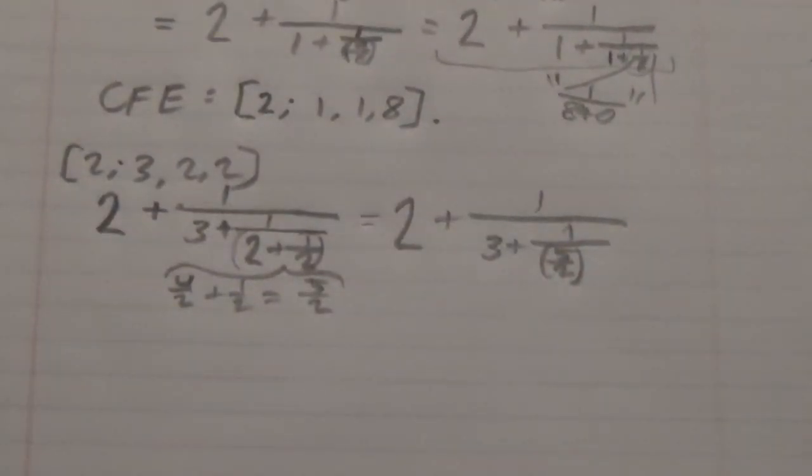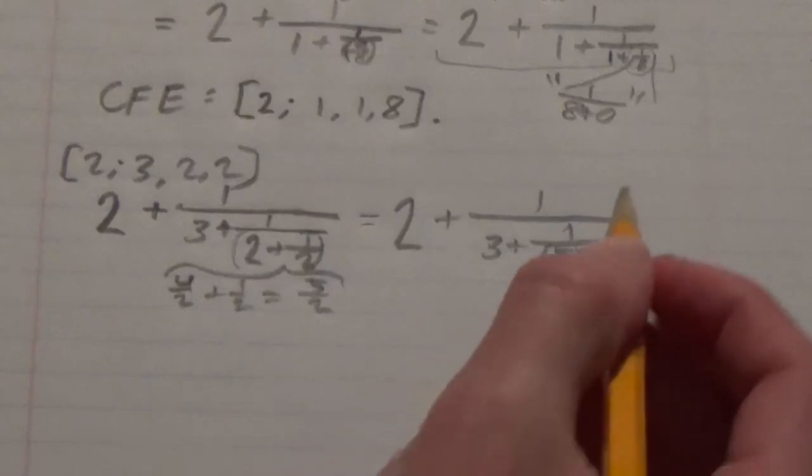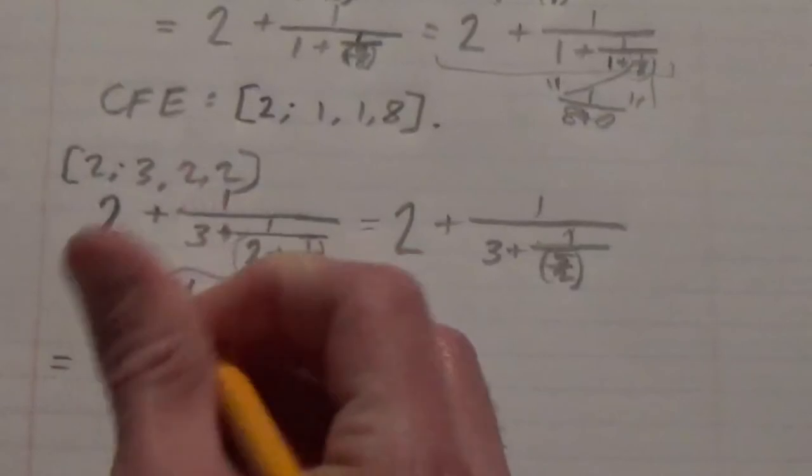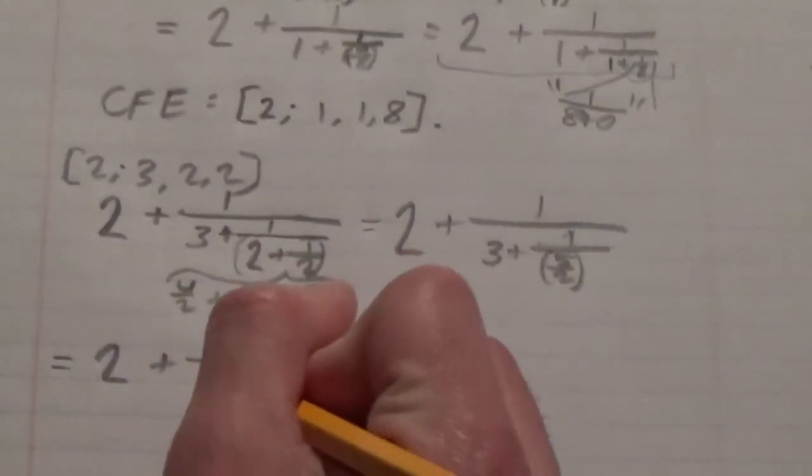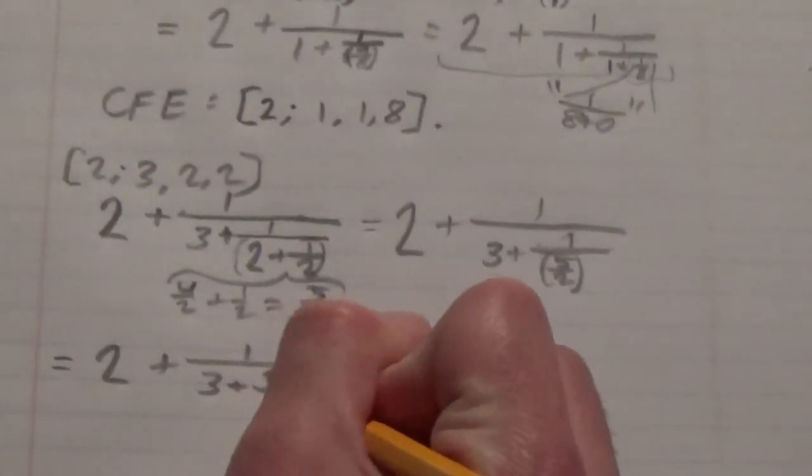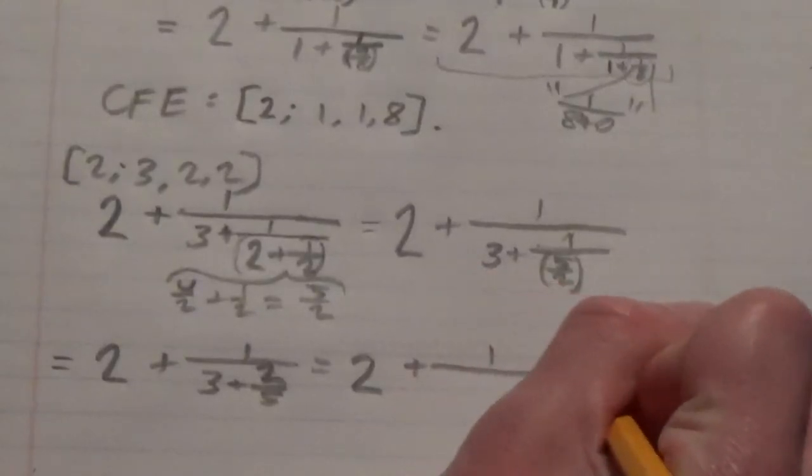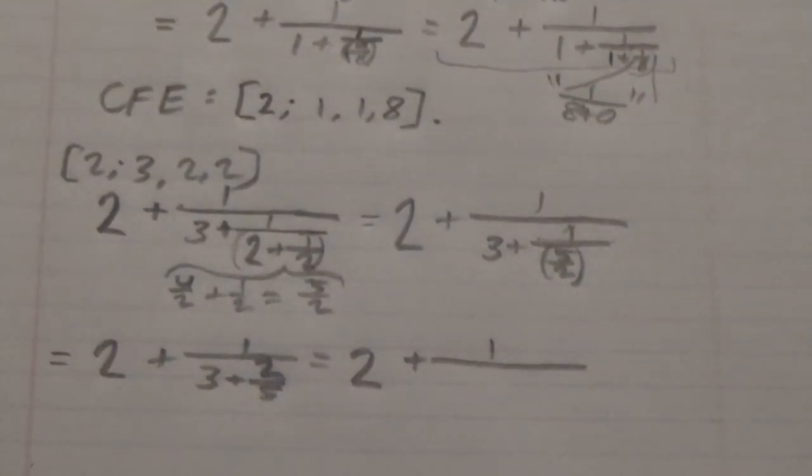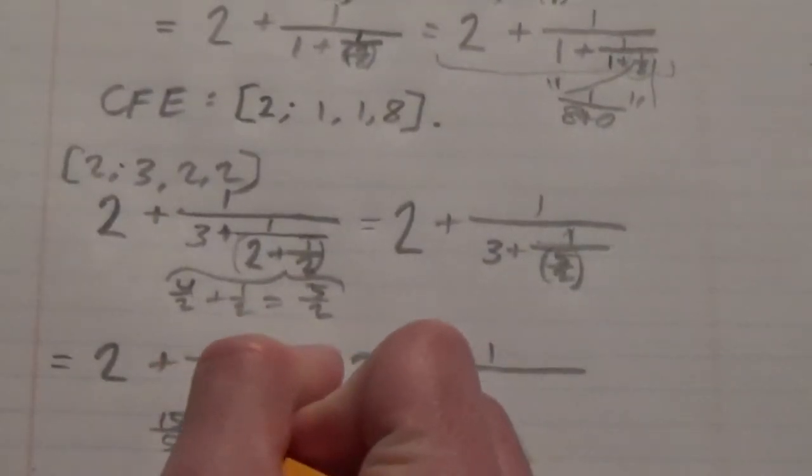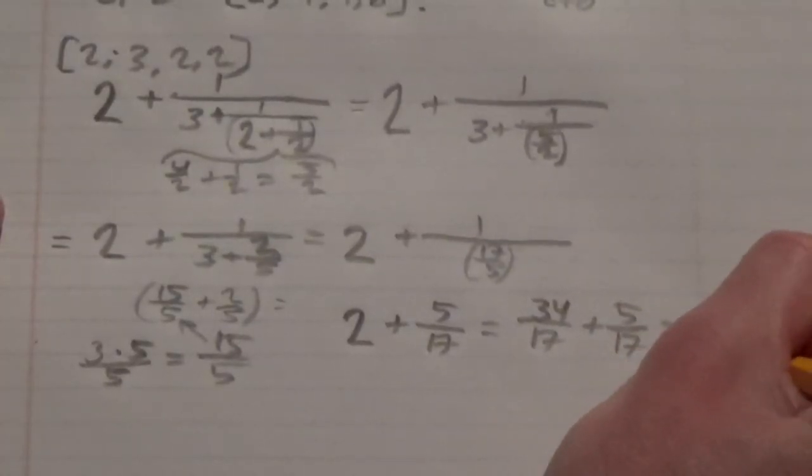So we can rewrite it here as 5 halves. And then we see that other very key operation, which is taking 1 over something, which is the reciprocal. From here, we can rewrite it as 2 plus 1 over 3 plus, and it's the reciprocal of 5 halves, or 2 fifths. We can rewrite that as 1 over, well here we have 3 plus 2 fifths. Well what is that? 3 can be written as 15 fifths. We're just repeatedly taking the lowest common denominator, or finding the lowest common denominator of these numbers, which is 39 seventeenths.